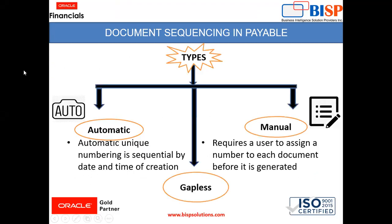There are three types by which document sequencing can be done: automatic, gapless, and manual. In automatic, unique numbering is sequential by date and time of creation. Under manual, it requires a user to assign a number to each document before it is generated. Under gapless, it ensures no sequence numbers are lost due to incomplete or failed document creation.